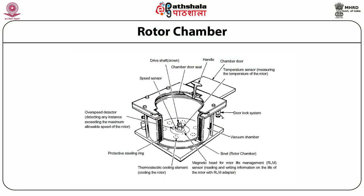The rotor chamber contains many components: thermoelectric cooling elements that control the temperature, a protective steel ring, an overspeed detector that alerts you if speed is exceeded, a speed sensor that measures rotor speed, a chamber door with seal, handles to open and close, a door lock system, a vacuum chamber that provides vacuum, and a magnetic sensor for the rotor. These are the major components of the chamber of a preparative ultracentrifuge.